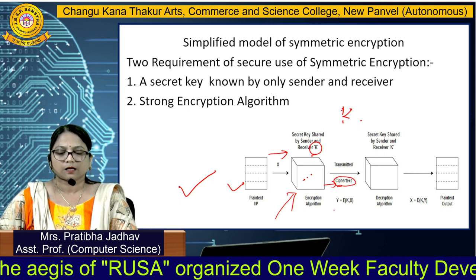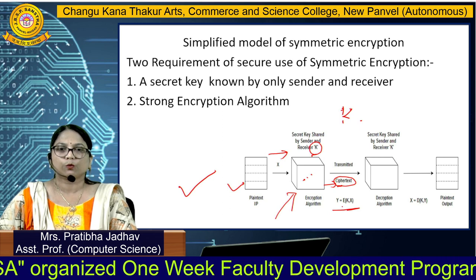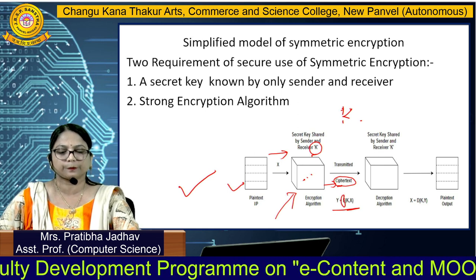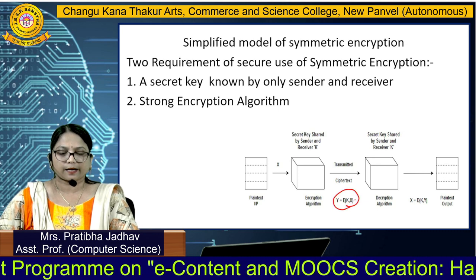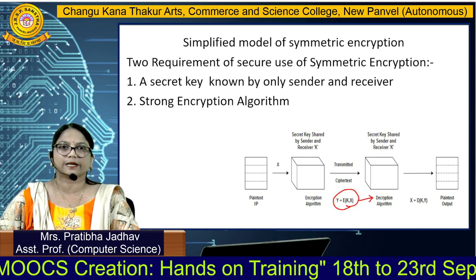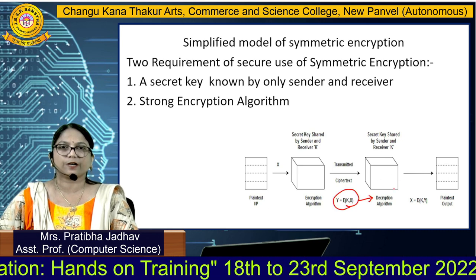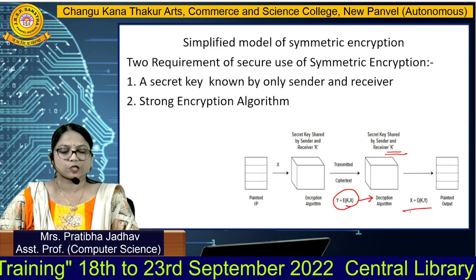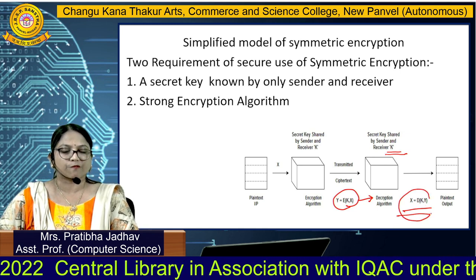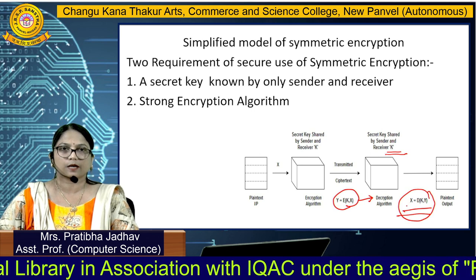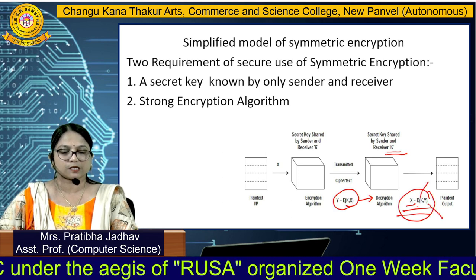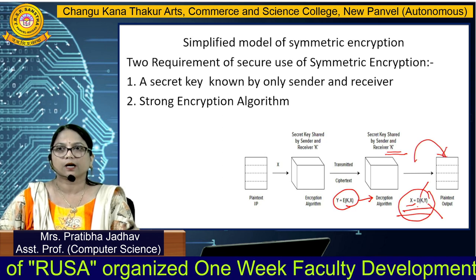Whatever ciphertext is generated is denoted by Y = E(K, X), where E means encryption algorithm, K means secret key, and X means the input plaintext. Whenever this message is received on the receiver side, it will be decrypted by the same key, formulated as X = D(K, Y), where D means decryption algorithm and Y means ciphertext. We will again get the plaintext after the decryption process.